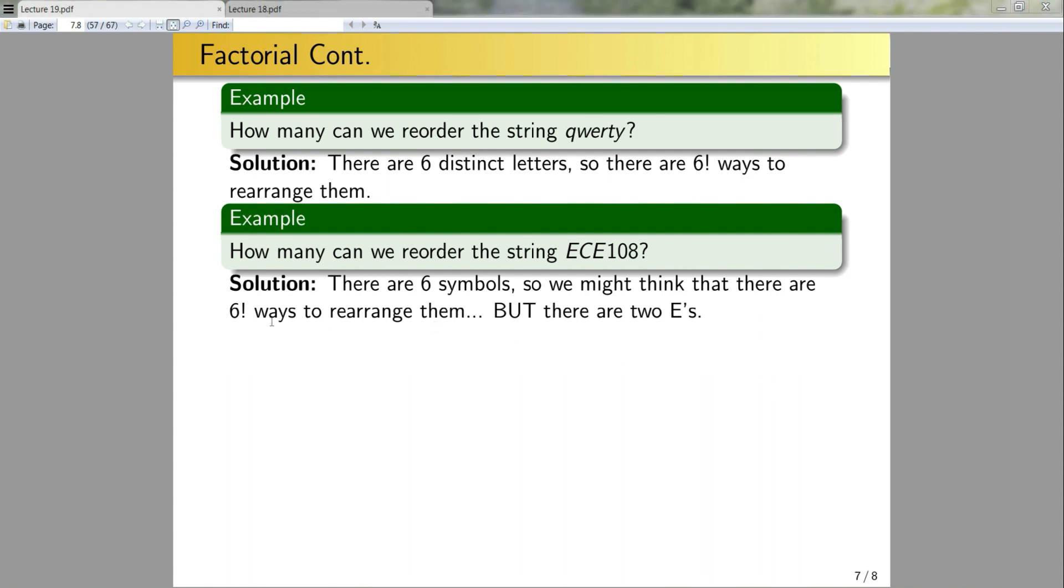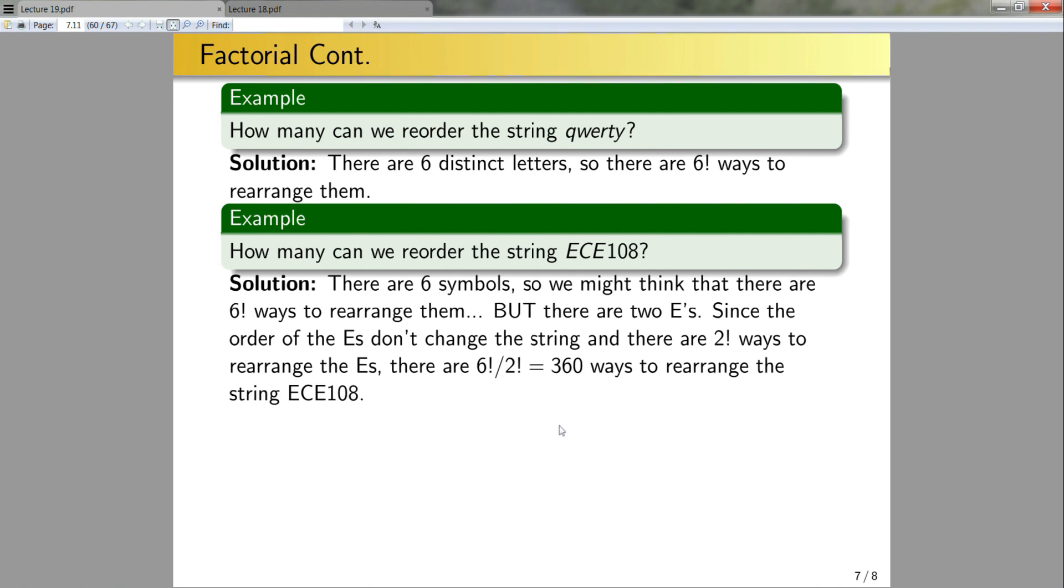I now need to divide this 6 factorial by the number of ways that I can rearrange the letters without changing the string. Since the order of the E's doesn't change the string, and since there's 2 factorial ways to rearrange these two E's, there will be 6 factorial divided by 2, which is 360 ways to rearrange the string ECE108.